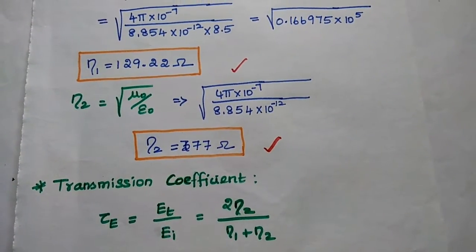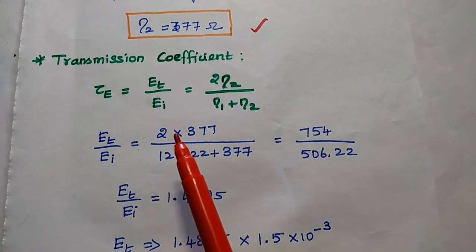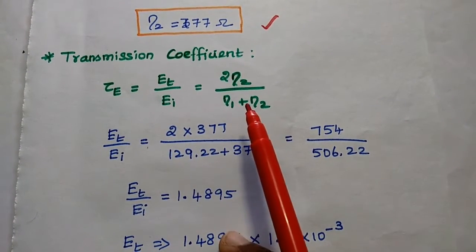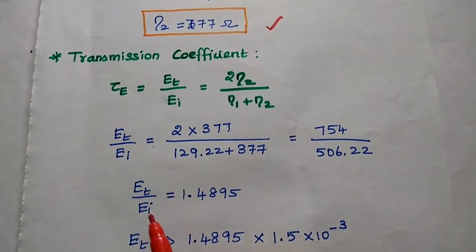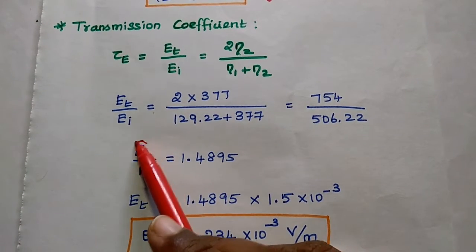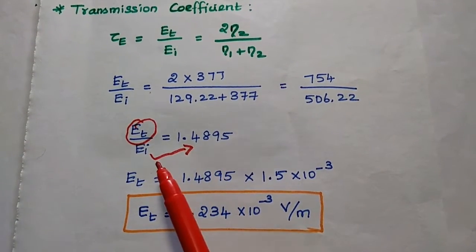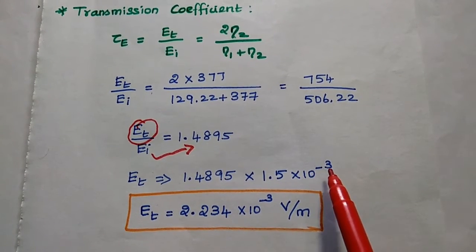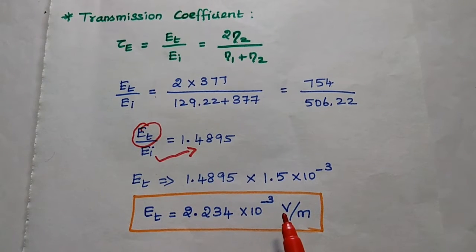Next we find the transmission coefficient. Tau E equals ET by EI, which equals 2 eta 2 by eta 1 plus eta 2. Substituting eta 1 and eta 2 values gives the ratio ET by EI equal to 1.4895. Then substituting EI equal to 1.5 millivolt per meter — that is 1.5 × 10⁻³ — the transmitted electric field ET equals 2.234 × 10⁻³ volt per meter.